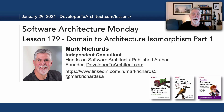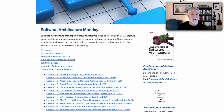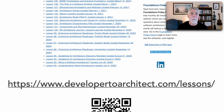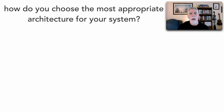Hello everyone and welcome to Software Architecture Monday. My name is Mark Richards and in this lesson number 179 I'll talk to you about a very important concept in architecture called Domain to Architecture Isomorphism. You can get a listing of all of the lessons I do in Software Architecture Monday through my website at developer2architect.com/lessons. This particular lesson is about how to choose or select the most appropriate architecture for your system, and also to make sure that you have the right architecture currently in place.